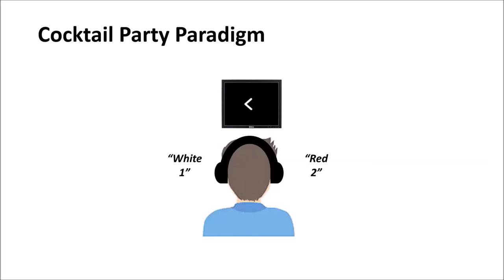In this work we model a simple version of the cocktail party paradigm in which a visual cue directs attention to a talker on the left or right and the task is to report the color and number words at the cued location. In this example the visual cue points left so the correct answer would be white 1.